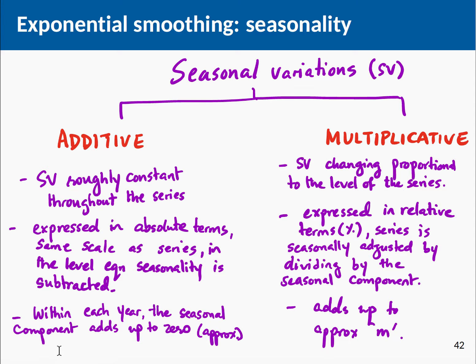In the additive model, within each year the seasonal components add up to approximately zero, because the fixed variation causes peaks to cancel out with troughs. But for the multiplicative model this is not true — the seasonal components add up to approximately the number of seasonal periods M itself. So for quarterly data with the multiplicative model, M equals 4. These are really important things to think about when working with seasonal models.